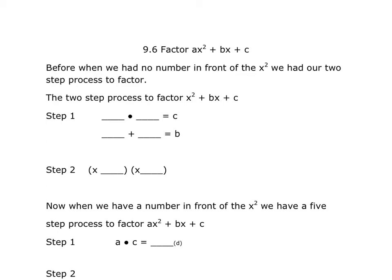So five-step factoring — it might take some of us a few tries to understand it. At the beginning, I give it to you algebraically, and sometimes that's confusing, so if this is too complicated, just make sure you're really paying attention once we get to the numbers. This is what we had to do in 9.5 when we factored: we took the factors of C, called them term 1 and term 2, those same two terms had to add up to B, and our answer was simply X plus term 1 and X plus term 2.